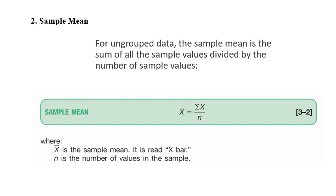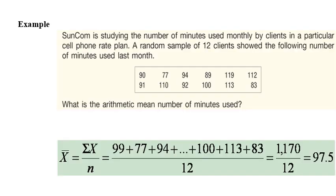In case that we don't have all information about population, we could work with the sample. In this case, the sample mean is x bar and we use the same formula, sigma x divided by n, small n being the number of the sample.